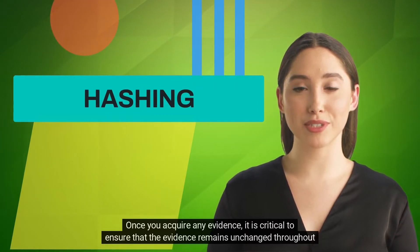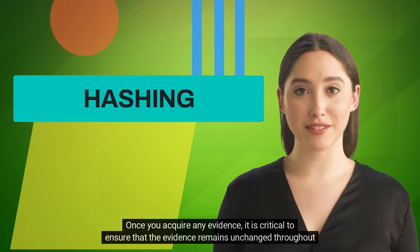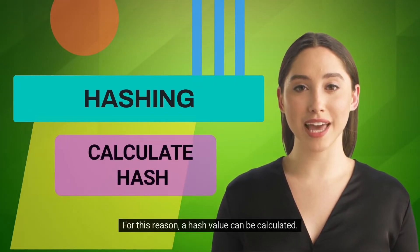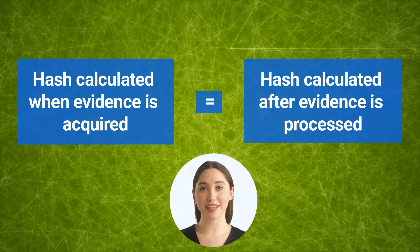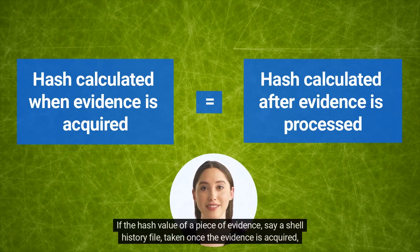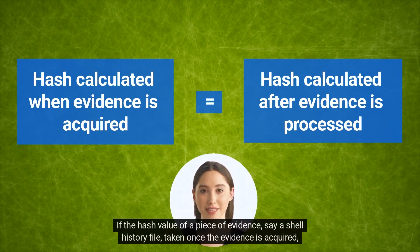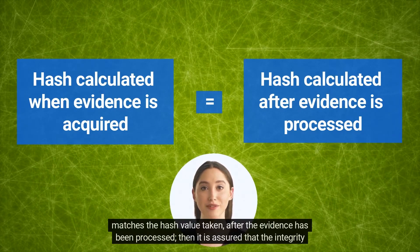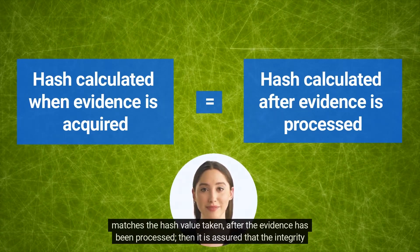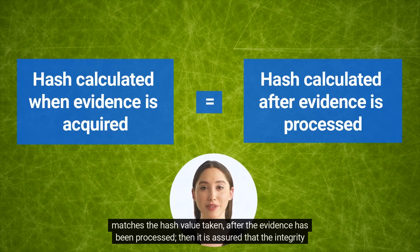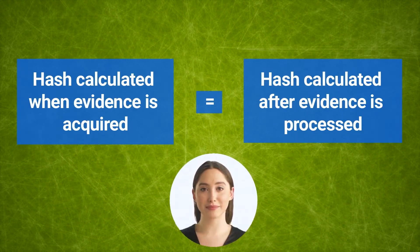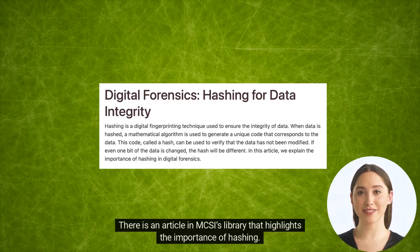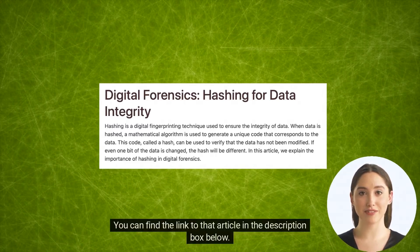Once you acquire any evidence, it is critical to ensure that the evidence remains unchanged throughout the entire investigation. For this reason, a hash value can be calculated. If the hash value of a piece of evidence — say, a shell history file — taken once the evidence is acquired matches the hash value taken after the evidence has been processed, then it is assured that the integrity of the evidence is maintained. There is an article in MCSI's library that highlights the importance of hashing; you can find the link in the description box below.